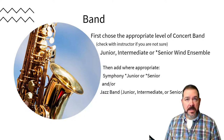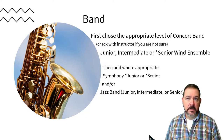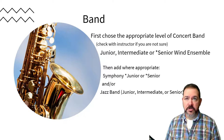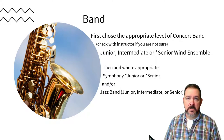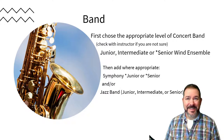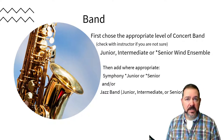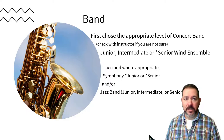For band, choose the appropriate level of concert band — that's where you start. If you're not sure whether you should be in junior, intermediate, or senior wind band, talk to Dr. McLennan — he can help set you straight. In addition to the concert band class, you would take either symphony or jazz band at the appropriate level.